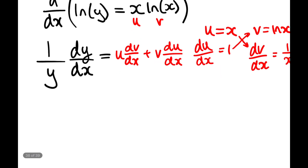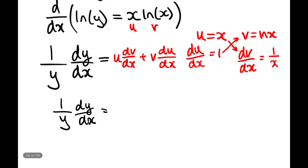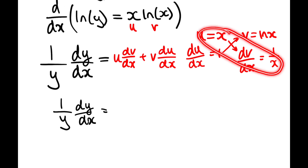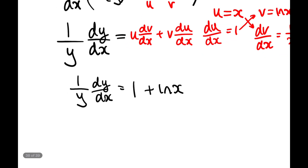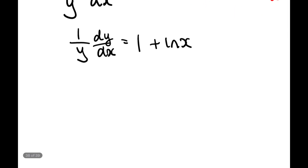Writing in our values: (1/y)·(dy/dx) equals x·(1/x) plus ln(x)·1. Now x times 1/x is just 1, because the x cancels. And ln(x) times 1 is just ln(x). So we get (1/y)·(dy/dx) = 1 + ln(x). We have just differentiated x·ln(x) and got 1 + ln(x). We are almost there — we need to isolate dy/dx.